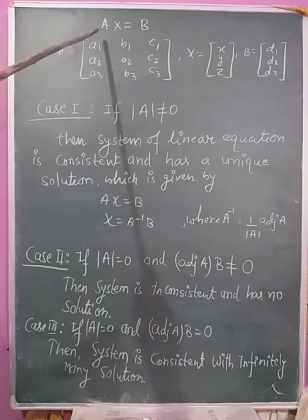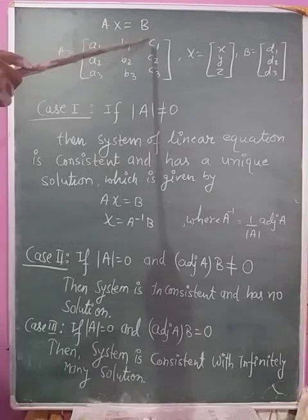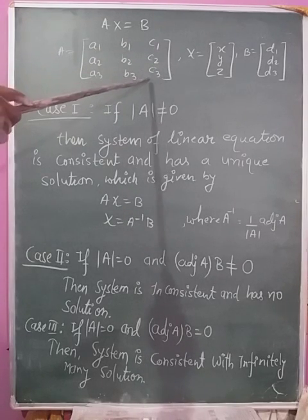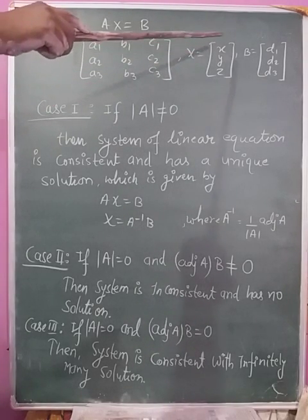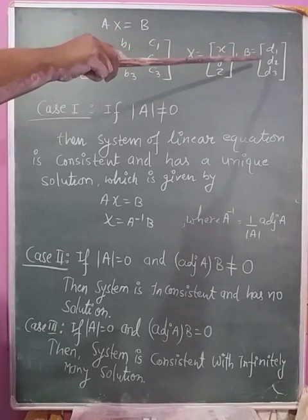Now, AX = B where A is matrix a1, b1, c1; a2, b2, c2; a3, b3, c3. X equals variables x, y, z. B equals d1, d2, d3.